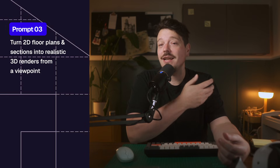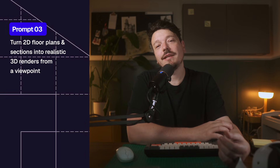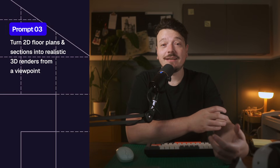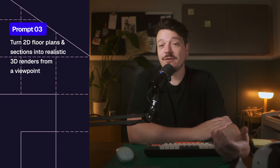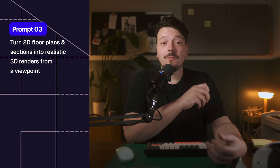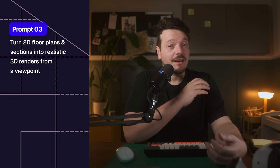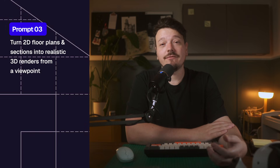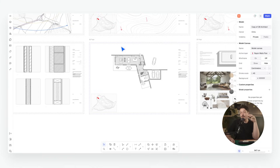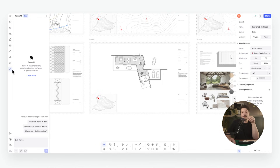In architecture and design, speed matters — whether you're trying to win over a client, prepare a competition entry, or pull together a school project. Being able to communicate a clear and compelling vision quickly can be a game changer. That's where Rayon's AI steps in: it cuts out hours of manual work, lets you explore more ideas in less time, and helps you take on more projects without compromising quality. Once your floor plans and sections are ready, you can generate a clean, realistic 3D render from any viewpoint directly from the AI panel with a single click.